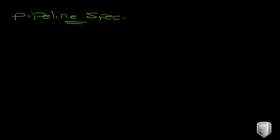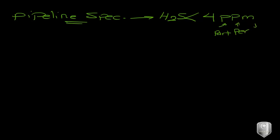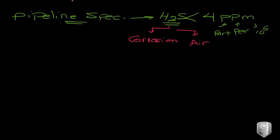For instance, you can't have hydrogen sulfide (H₂S) concentration higher than a certain limit — it must be less than a set concentration in ppm (parts per million). This is the concentration of H₂S. We mentioned before that hydrogen sulfide can cause corrosion and also has a lot of environmental problems, especially related to air pollution.